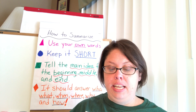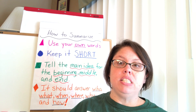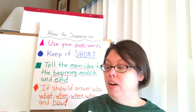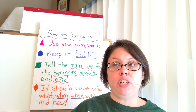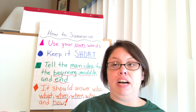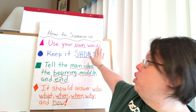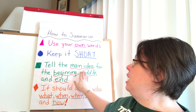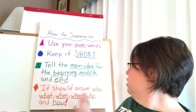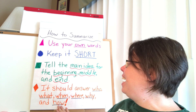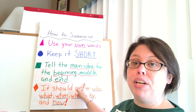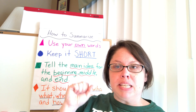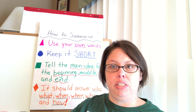So today, our clear learning target is we're learning to retell a fable. At the end of this, we're going to be able to write a summary of The Fox and the Grapes. And don't forget, how do you write a summary? Always remember: use your own words, keep it short, tell the main idea of the beginning, middle, and end, and it should answer the questions who, what, when, where, why, and how. But we're going to focus today on beginning, middle, and end. You guys have done this so many times, so I know you're going to know what to do, and I'm excited for your parents and your family to see you be able to do this as well.